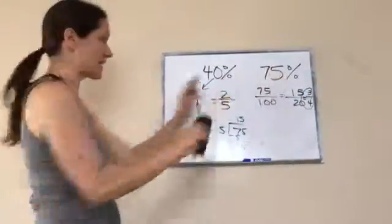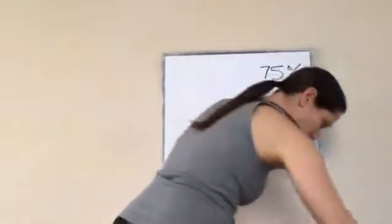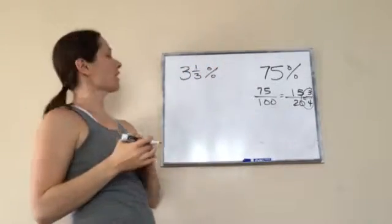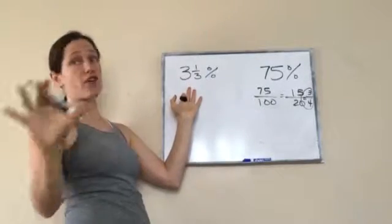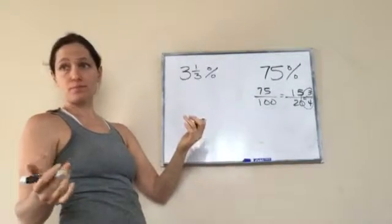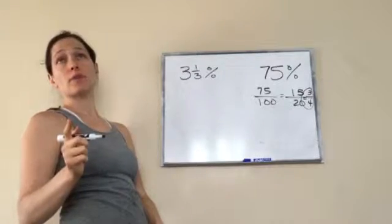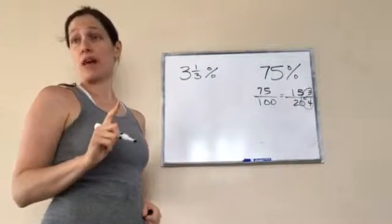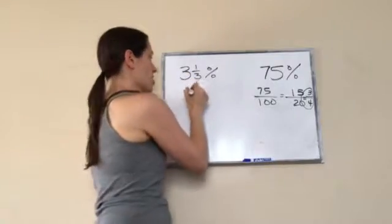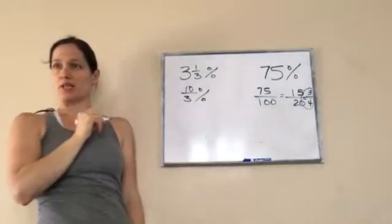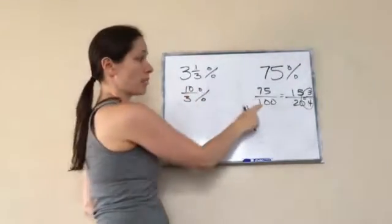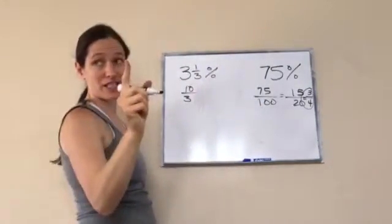Okay, using that same idea, watch what's going to happen right here. This may freak you out. 3 and 1 third percent. Now, you may think, oh, it's already in fraction form, but not just fraction form. This is actually a percent. 3 and 1 third percent. Well, I think I can get it into decimal number. Okay, so let's actually do improper. Can we do that? What would this be as an improper number?